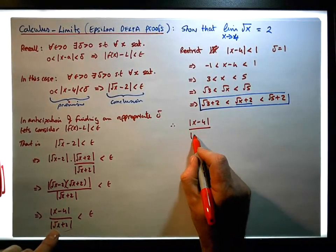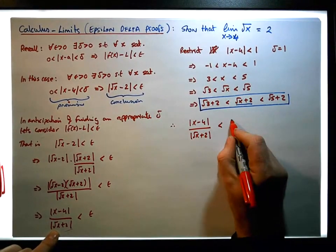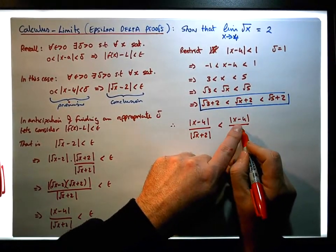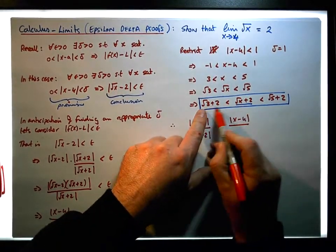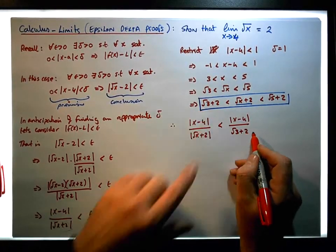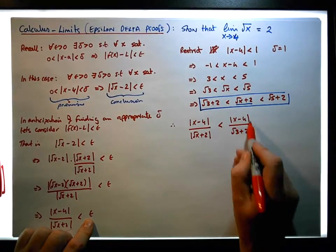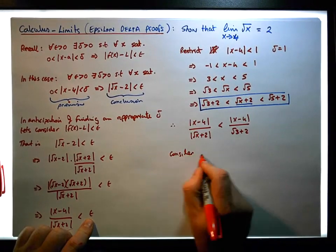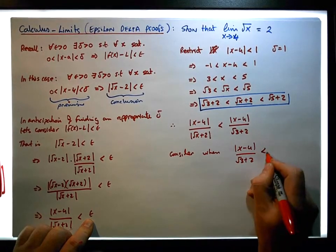The expression minus four all over the absolute value of the square root of x plus two must be definitely less than the absolute value of x minus four, divided by a number. We can divide by a number that's smaller than this, and the inequality will still hold. We do have such a number: the square root of three plus two. But we need this expression to be less than epsilon, so let's make it less than epsilon. Consider when x minus four all over root three plus two is less than epsilon.